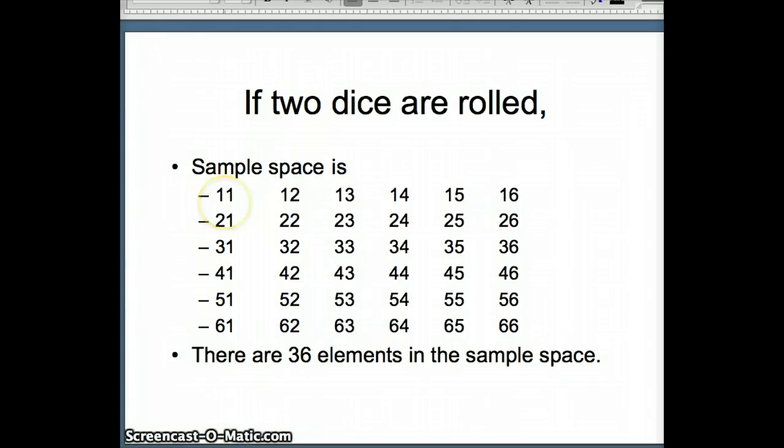And here is the sample space, starting at (1,1). First die is 1, second die is 1. First die is 1, second die is 2. First die is 1, second die is 3, through first die is 1, second die is 6, all the way through first die is 6, second die is 6. So there are 36 elements in the sample space, and these are all equally likely.